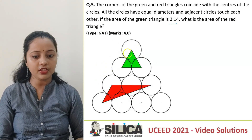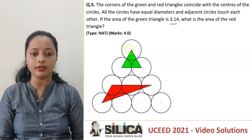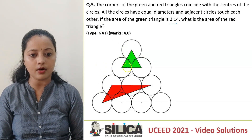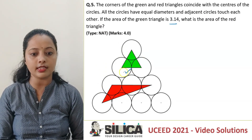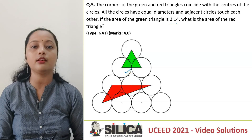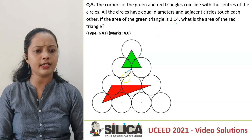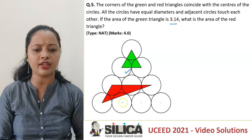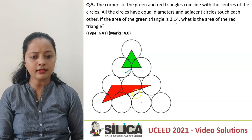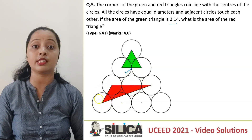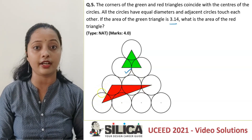Now be careful — they have given you a figure and are giving you the area of the green triangle as 3.14. There is another red triangle given whose area we will have to find.